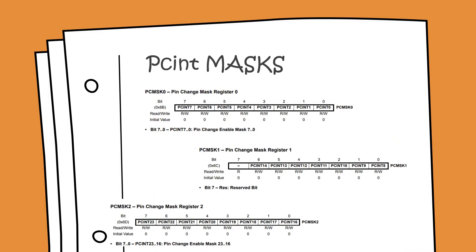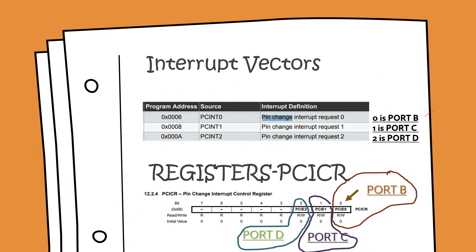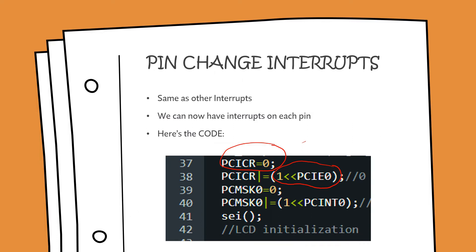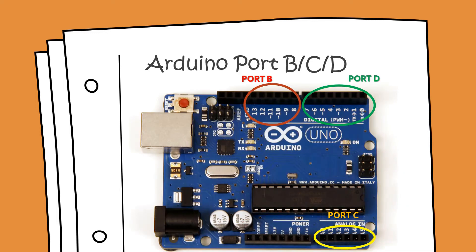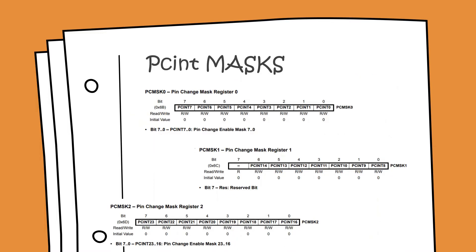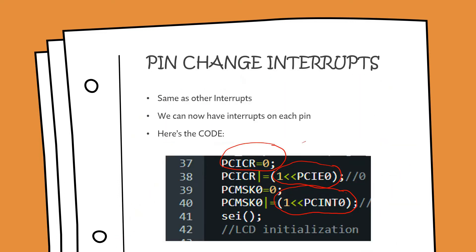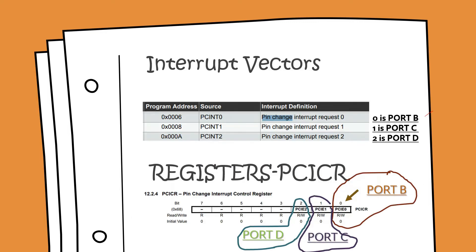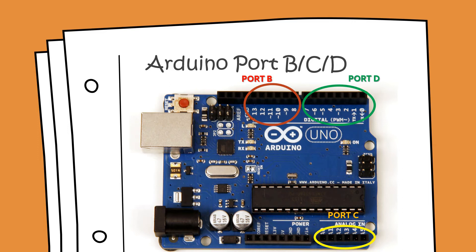There is one more register called the pin change mask register. In the code, the pin change mask register is first set to 0 and the PCINT0 bit is set to 1. So what we are trying to do is enable the pin change interrupt first on port B, and then by setting this mask correctly we are enabling the interrupt to work on pin 8 of the Arduino. By just these two lines of code you can set the interrupt to watch any input pin.